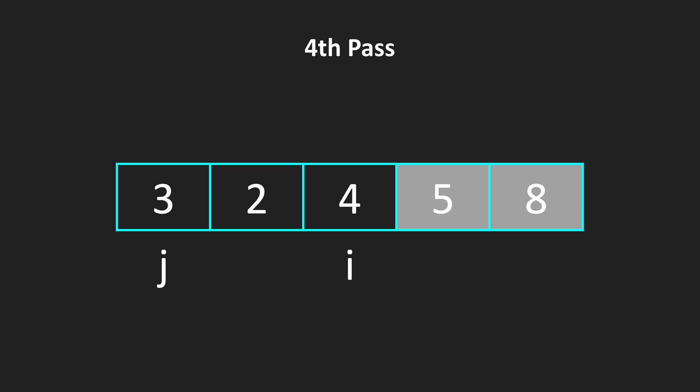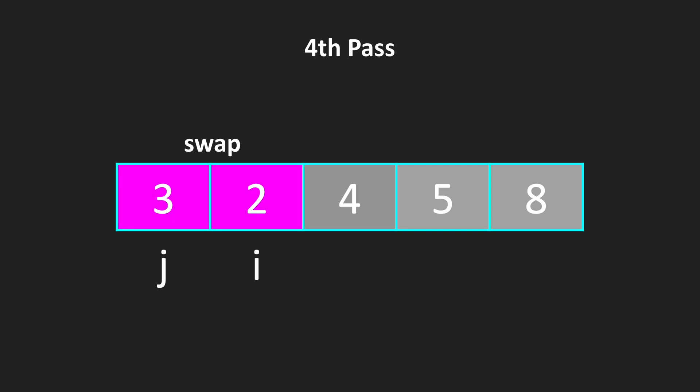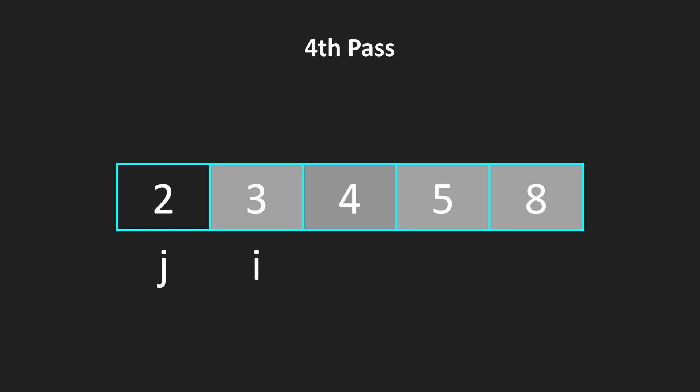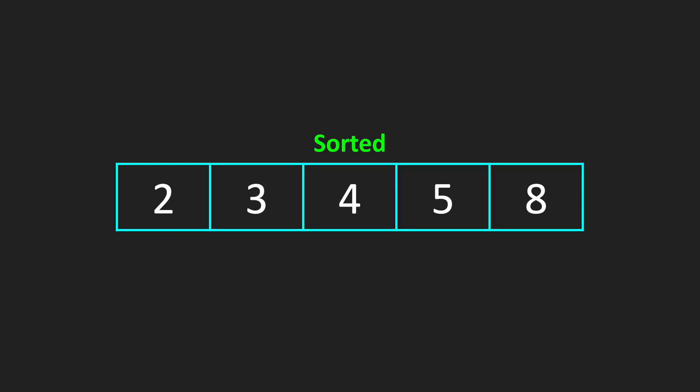After finalizing our third pass, we are moving our i, because our rightmost element is already sorted. So now we need to sort only two elements in our array. So we are starting our fourth pass, and we are comparing 3 and 2. 3 is more than 2. We are swapping these two elements, and that's the end of our fourth pass. Our rightmost element is sorted, and after 4 passes, we have sorted our array.